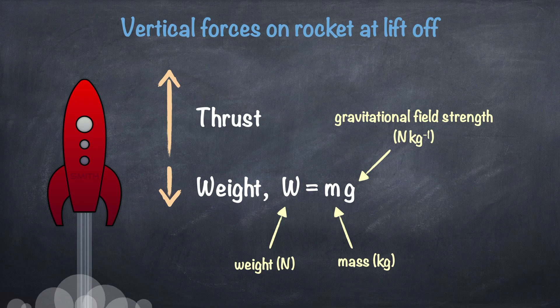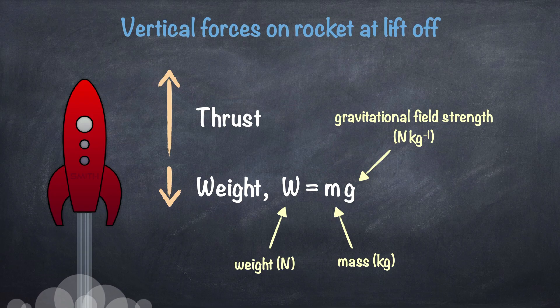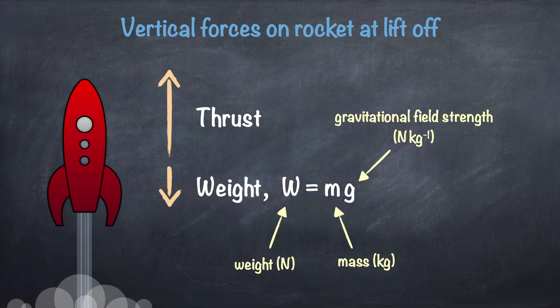W is equal to MG. M is the rocket's mass in kilograms, and G is the gravitational field strength of the planet that the rocket is lifting off from. On Earth, G is 9.8 newtons per kilogram. You'll find that number in the datasheet at the start of the National 5 physics exam.